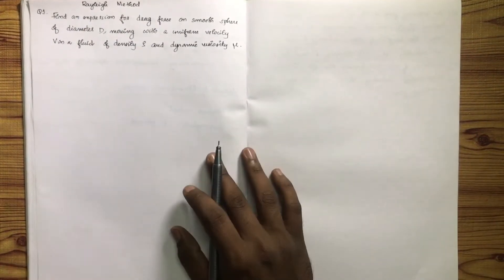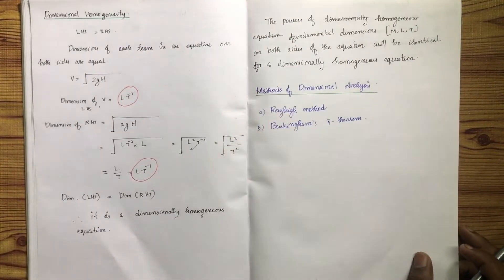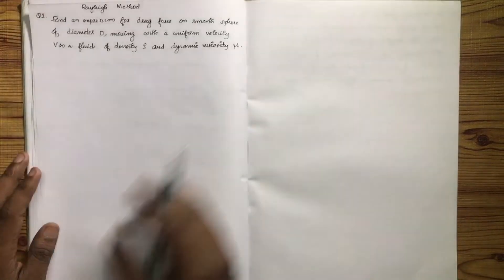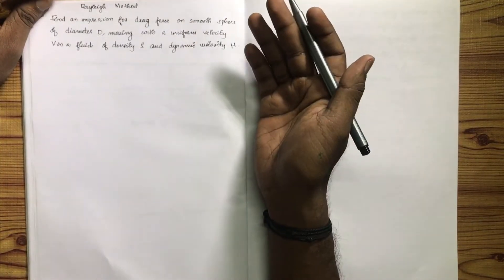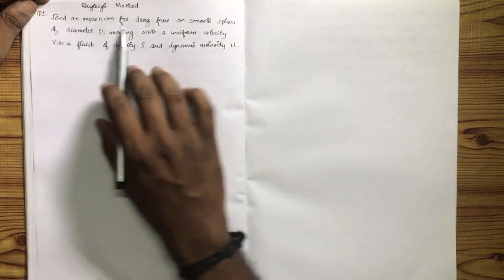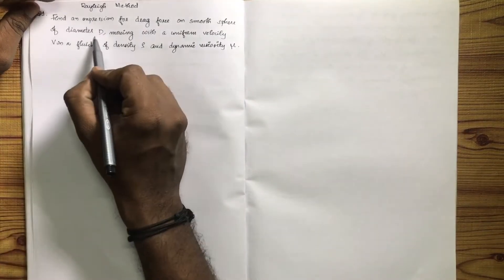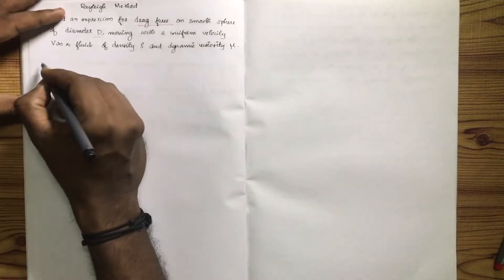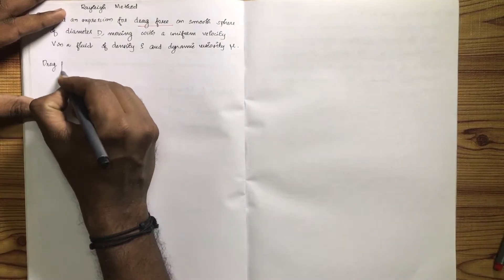This is the Rayleigh method. I will talk about dimensional analysis and the Rayleigh method in particular. First, find an expression for drag force on a smooth sphere of diameter D. I will talk about the expression for drag force on a smooth sphere.